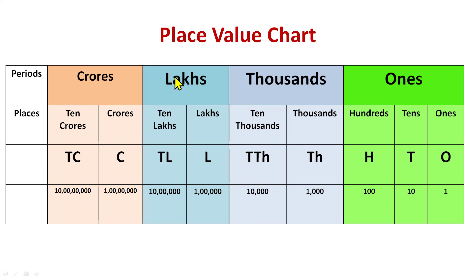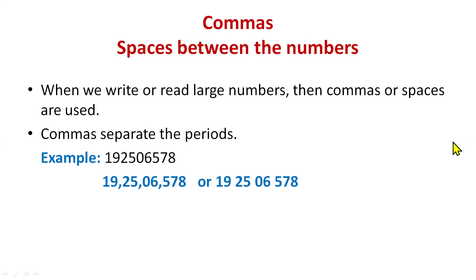This completes our place value chart with four periods: ones, thousands, lakhs, and crores. Now let's talk about commas. Commas are used to read big numbers. In some books, instead of commas, numbers are separated by spaces.